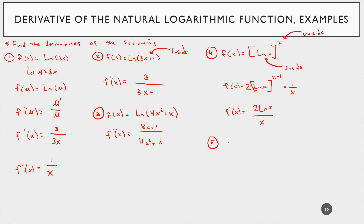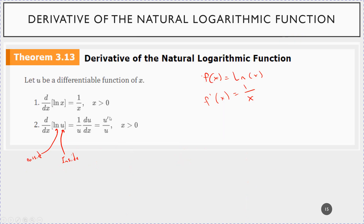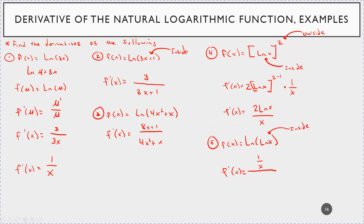This one is really interesting: find the derivative of f(x) = ln(ln(x)). The inside is ln(x). Whenever you have the derivative involving the natural log, it's the derivative of the inside divided by the inside. The derivative of ln(x) is 1 over x. And the inside of the outer natural log is ln(x). So this ends up being 1 over x times ln(x), i.e., 1 over (x · ln(x)). Remember: derivative of the inside divided by the inside.